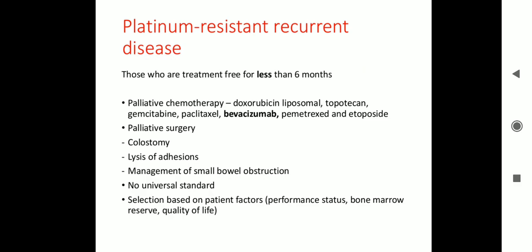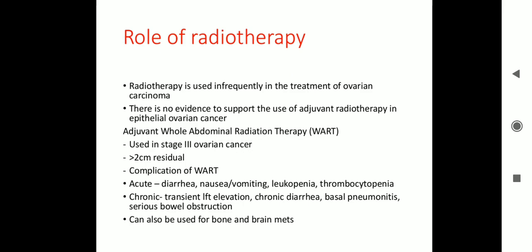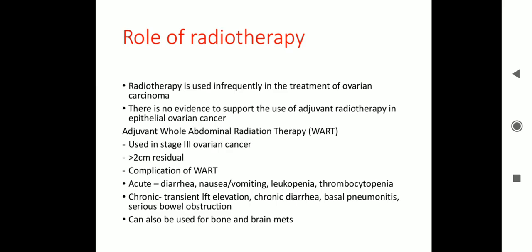Palliative surgery options include colostomy, lysis of adhesions, and management of small bowel obstruction. Tumours with BRCA1 and BRCA2 mutations: olaparib is used — it is a newer drug for relapsed ovarian cancer with mutations in one of the two BRCA genes who have responded to platinum-based chemotherapy. Radiotherapy is used infrequently and is not of much use. In stage 3, whole abdomen radiation therapy (WART) may be used when residual disease is more than 2 cm. Complications include diarrhea, nausea, and vomiting. Radiotherapy can also be used for brain and bone metastases.